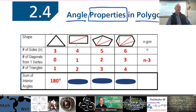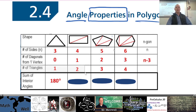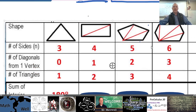Let's take a look at a polygon with four sides — a rectangle, square, parallelogram, or rhombus. The number of sides is four. The number of diagonals that can be drawn from one vertex is one. Now the number of triangles means the number of triangles formed when you draw your diagonals. If you notice on this rectangle, with one diagonal I have two triangles — one here and one there.